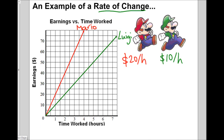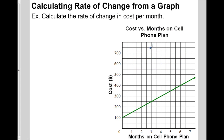In a second example, we have cost versus months on a cell phone plan. This graph is a little different in that it doesn't start at the corner — it actually starts at $100. So before you even use the phone, it already costs you $100. That could be an activation fee or the cost of a phone. After one month, the cost goes up to $150. After two months, $200. After three months, $250. So every month the plan goes up by $50 — that is the rate of change: $50 per month.